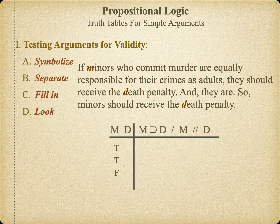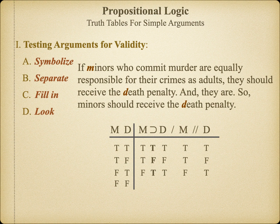Just as before, we place each statement of the argument on a single line, separated by single and double forward slashes, and then fill in our truth values. Next, we solve for the truth function of our only compound proposition, which is premise one. Then we do the same for each subsequent logical world. With this argument, we find no possible combination of true premises and false conclusion, so we know that this argument must be valid.